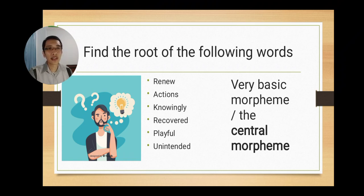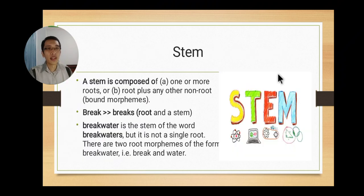Here we can find that the root of renew is new, the root of action is act, the root of knowingly is know, and cover for recovered, play for playful, and intent for unintended. We can understand that what is root is a very basic morpheme or the central morpheme.